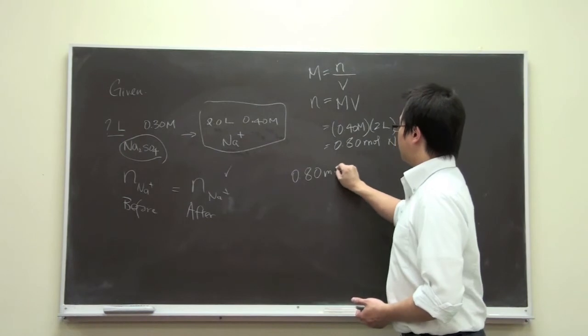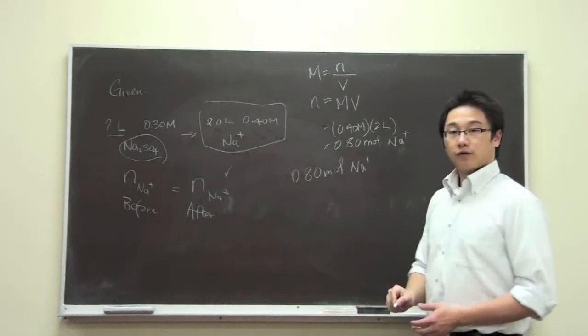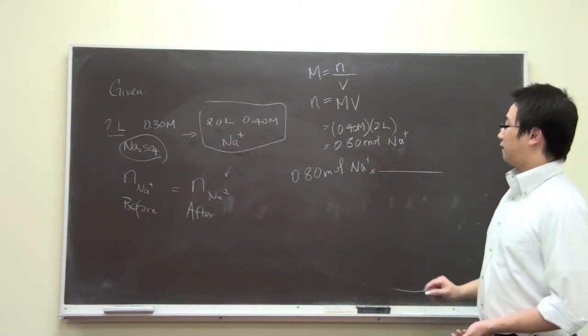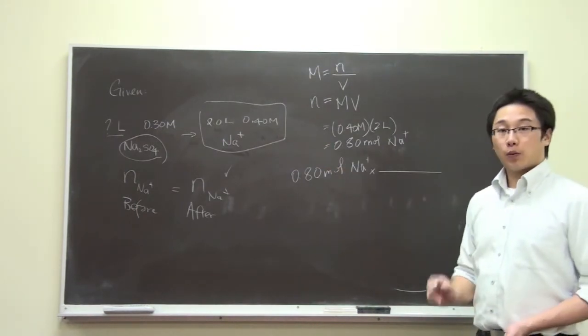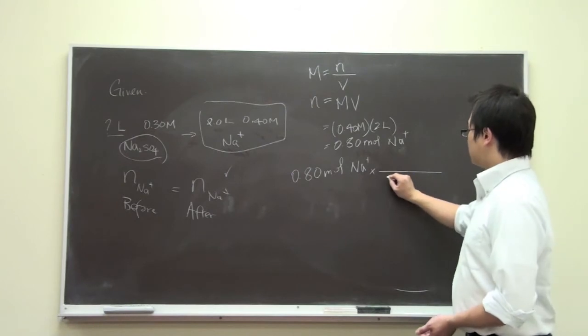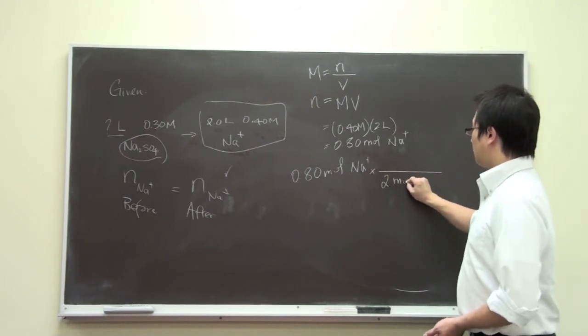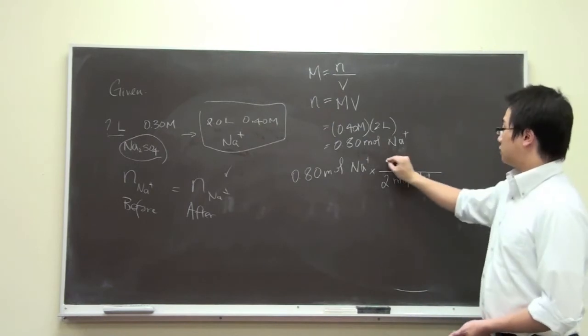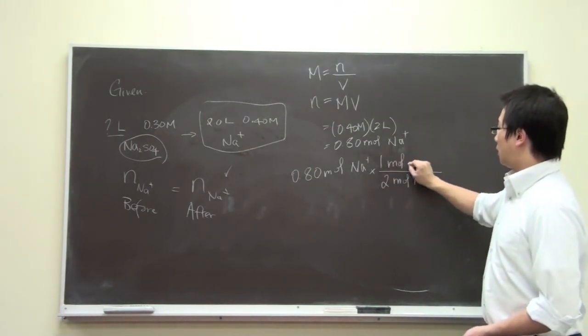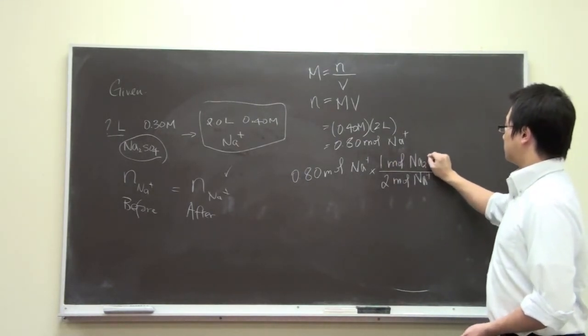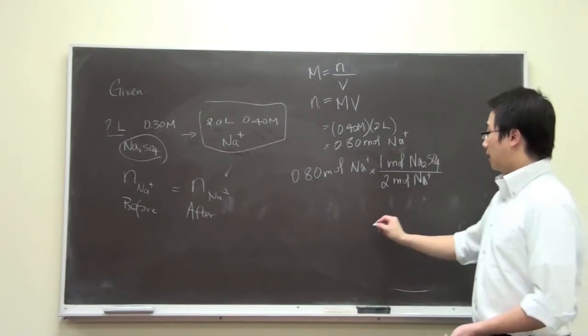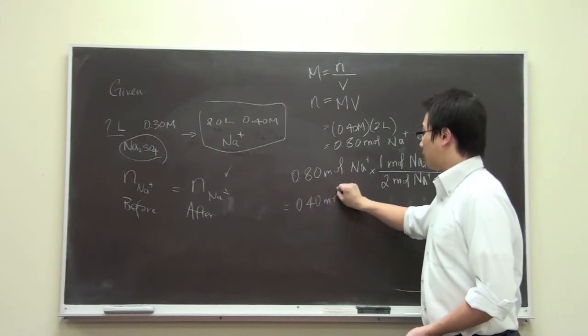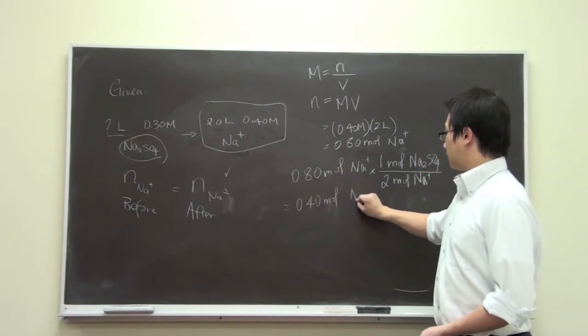So this is the number of moles we have for the sodium ion. And for each of the compound, we have two. So what we can do is that we have two moles of sodium ion, and it is to one mole of the sodium sulfate compound. And now we have 0.4 mole of the compound.